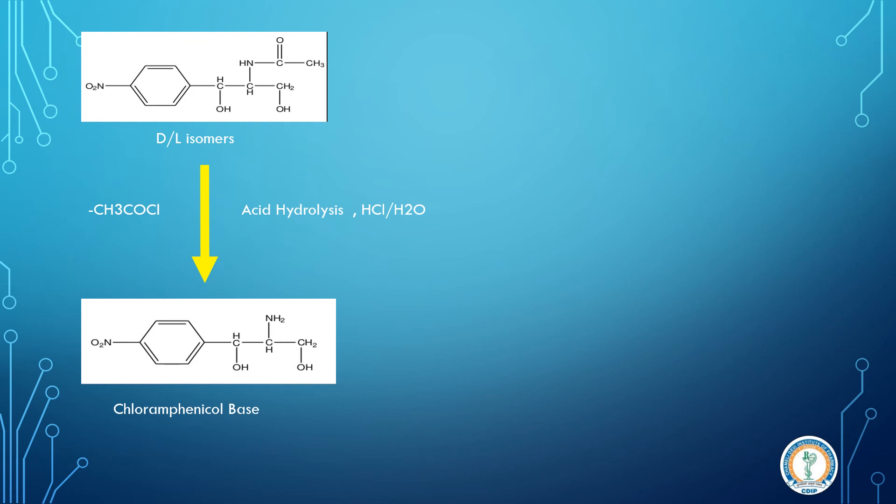Now the base is a mixture of dextro and levo form, so we have to do the resolution. In this step, we have to do the resolution and carry out a reaction with dichloromethyl acetate.